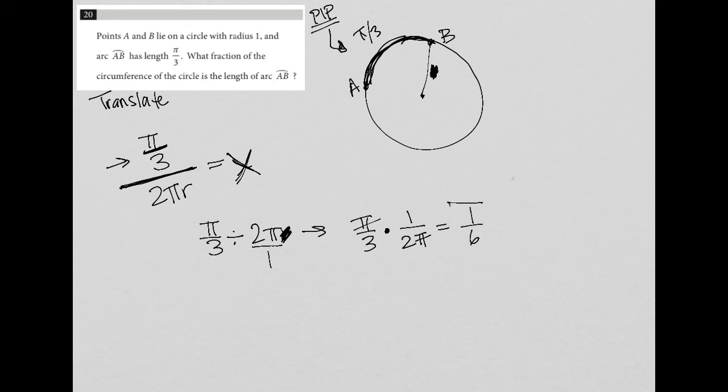So therefore, that is my answer. 1 sixth is the fraction of the circumference of the circle that's represented by the arc length AB.